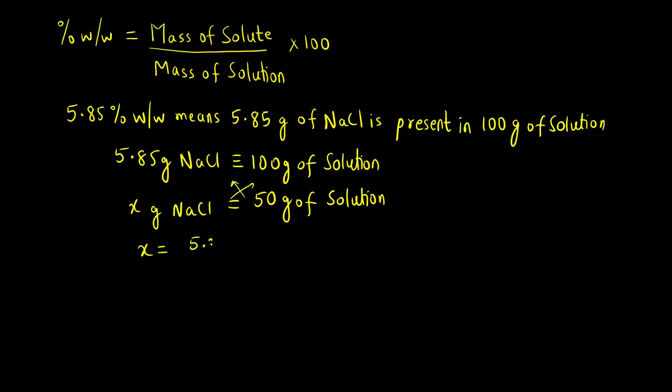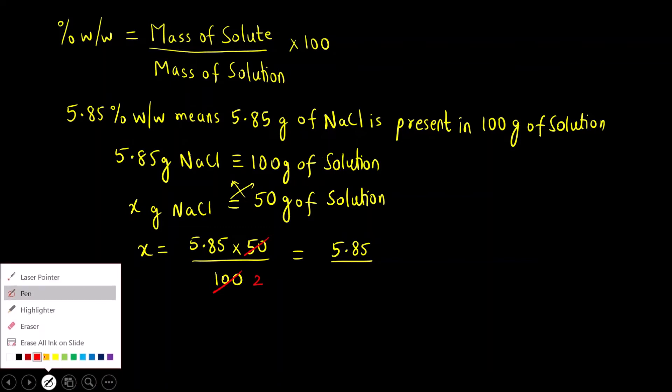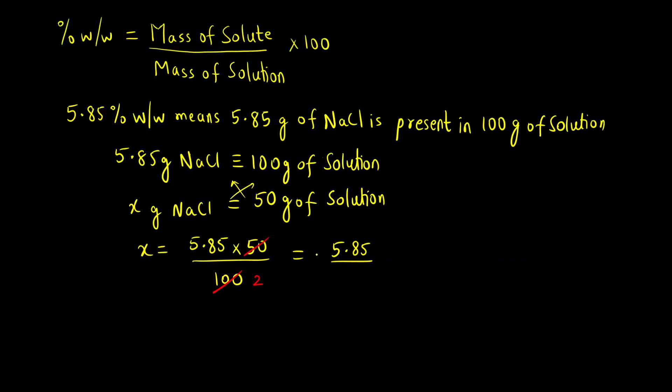5.85 times 50 divided by 100. This comes out to be 5.85 divided by 2, which is 5.85 divided by 2 grams of NaCl is present.